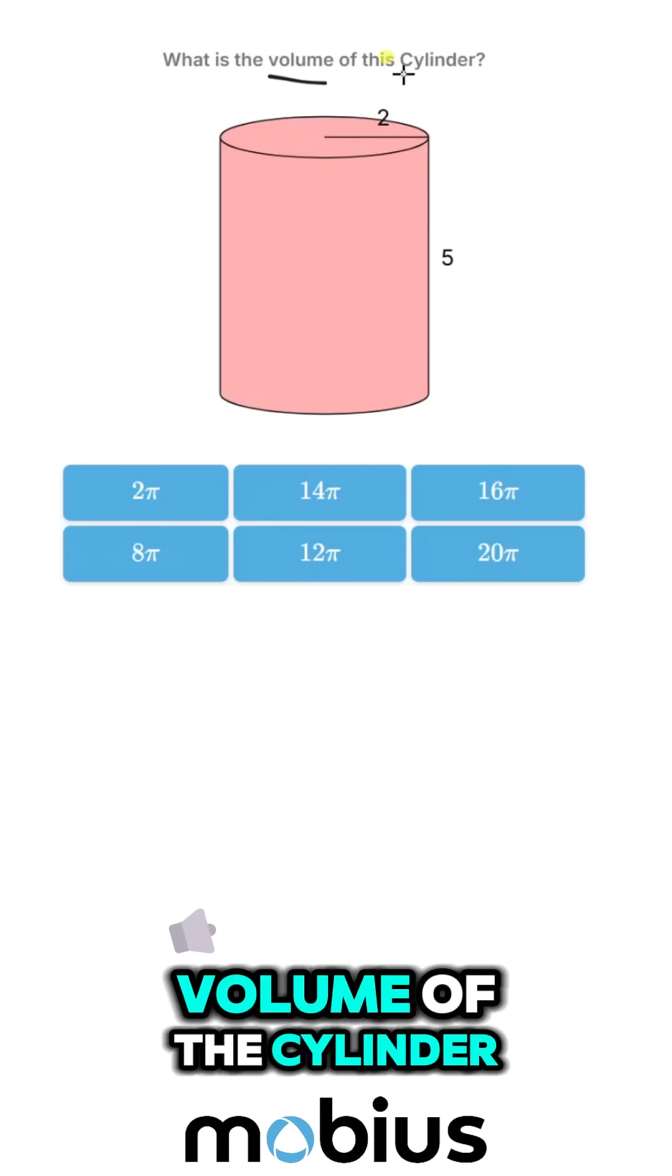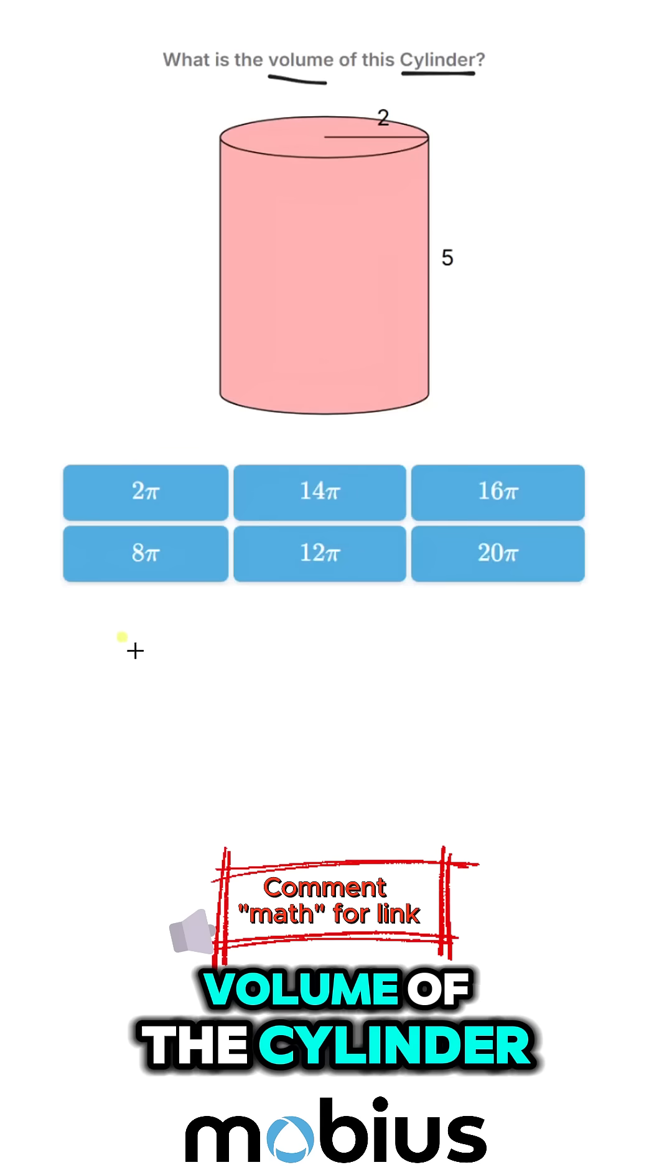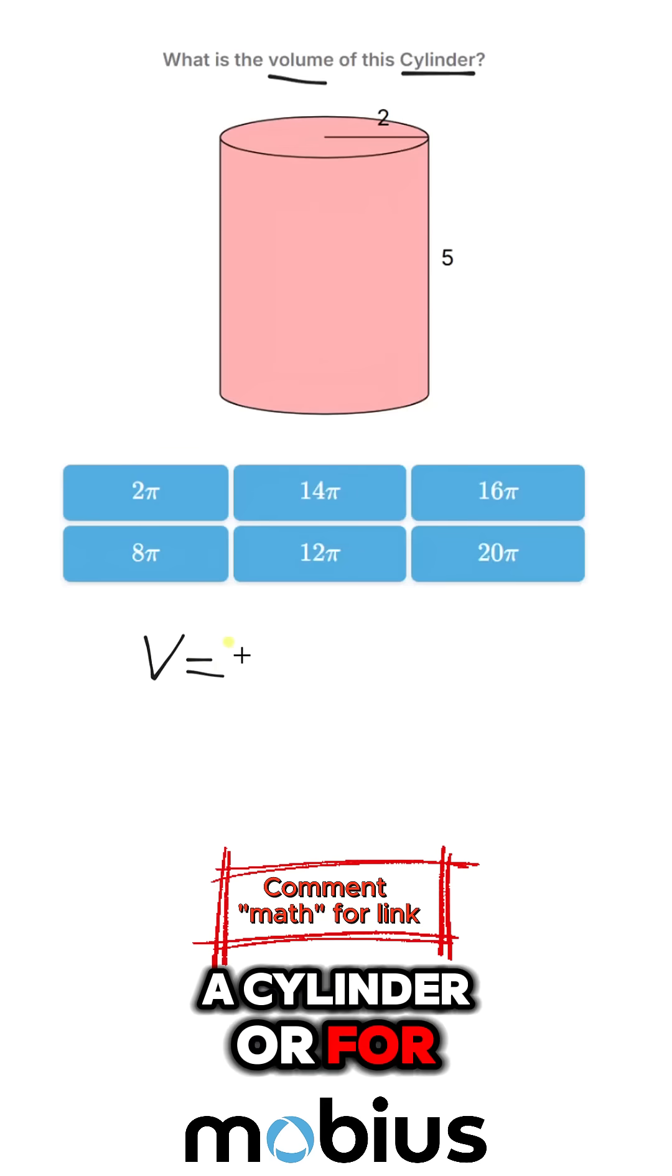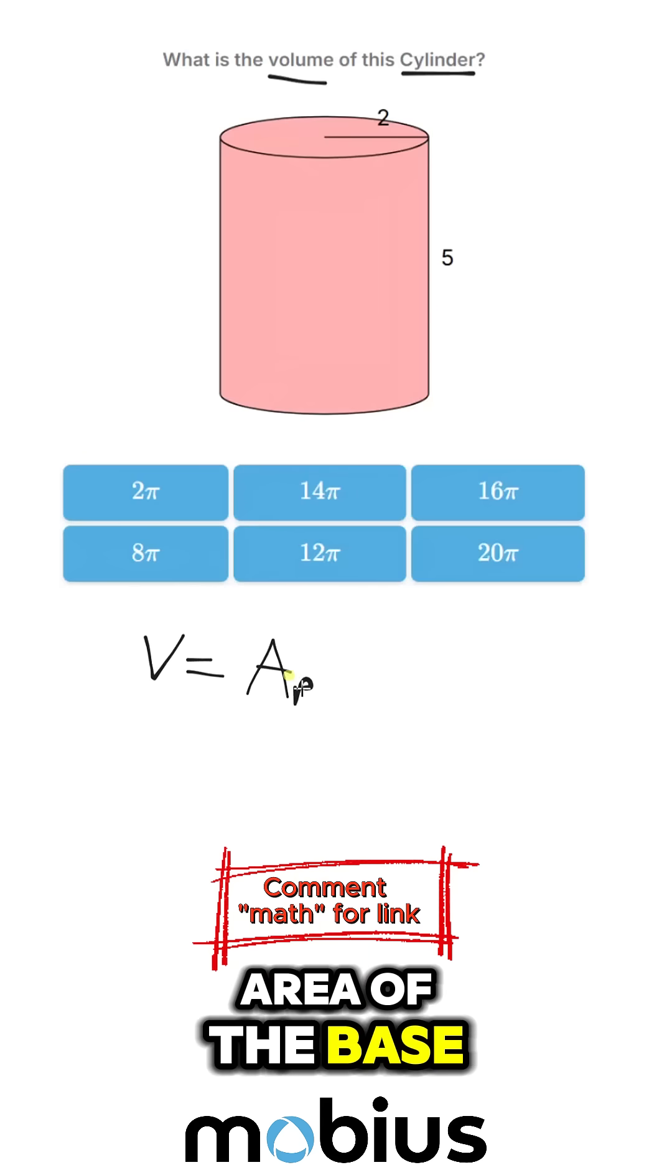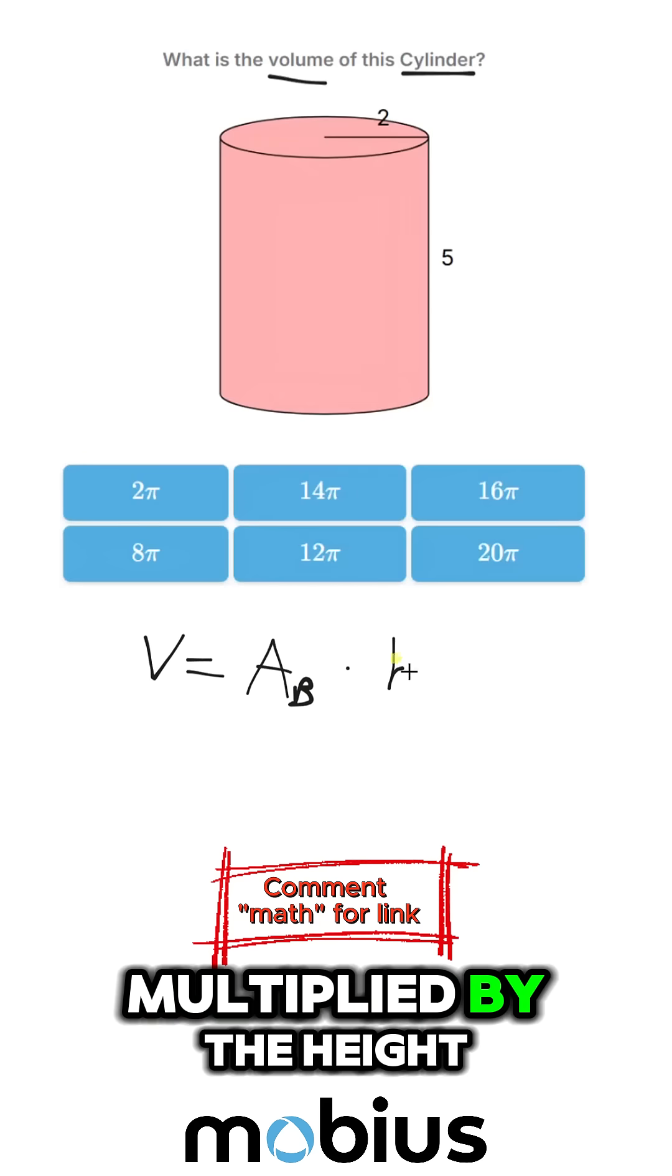We want to calculate the volume of the cylinder. So we know for a cylinder, or for any prism, the volume is the area of the base multiplied by the height.